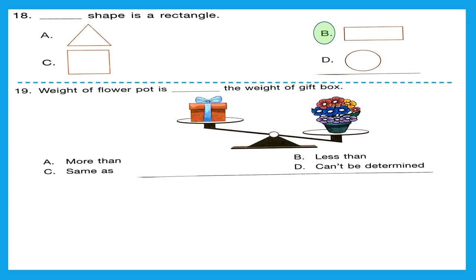Question 19: 'Weight of flower pot is dash the weight of the gift box.' On the balance beam, the heavier object goes down and the lighter one goes up. The gift box is lighter and the flower pot is heavier. So the weight of the flower pot is more than the weight of the gift box. Option A.